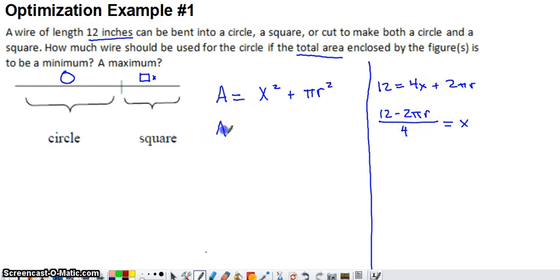So I can go to my area formula here and I can replace x with the quantity (12 - 2πr)/4. I still have to square that, so I've just replaced x with what we're saying x is equal to and we still have πr² as the other term of our area formula.